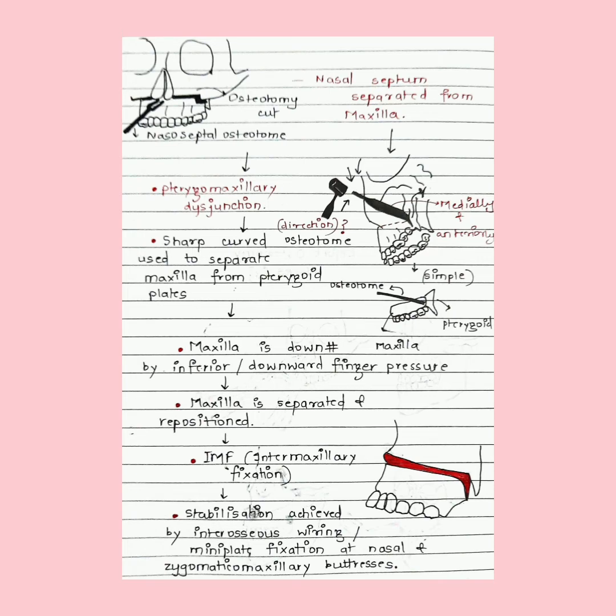This is malleted and the maxilla is separated from the pterygoid plates. Then maxilla is down-fractured by applying inferior or downward finger pressure until it separates.